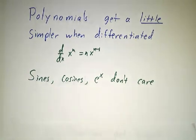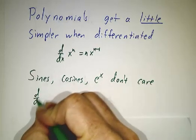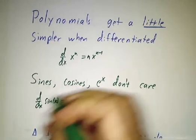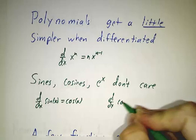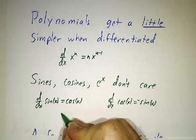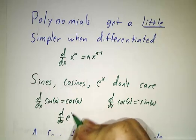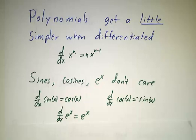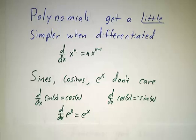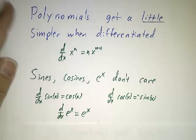Sines and cosines and e to the x, they don't care. The derivative of sin of x is cos of x. The derivative of cos of x is minus sin of x. The derivative of e to the x is e to the x. Differentiate these functions, and they just turn into themselves. Integrate these functions, they just turn into themselves. So they're good, neutral things that you can put wherever you want, and they won't mess things up at all.